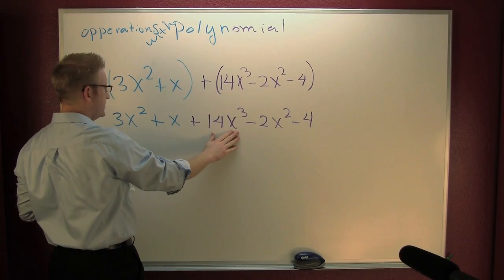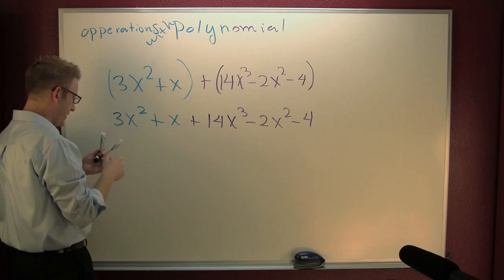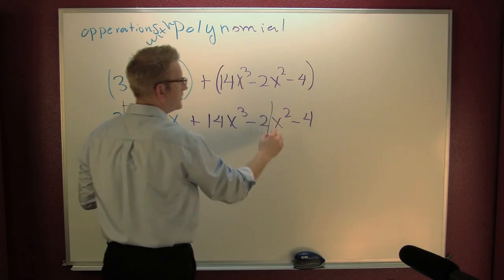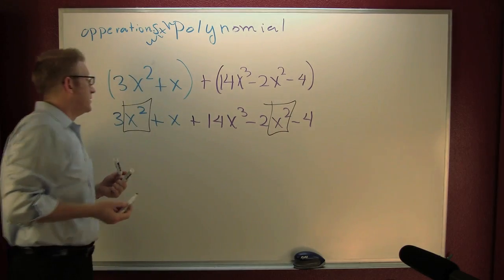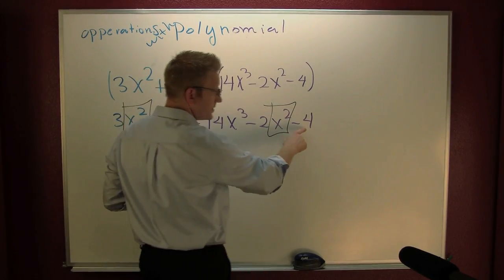Do I have any other x to the thirds? Doesn't look like it. What about x squared? Yeah, I got a couple squares. Looks like I only have one term with x's in it, and I have a constant term also.